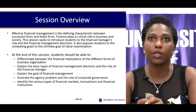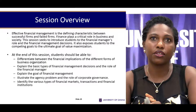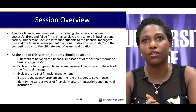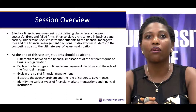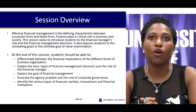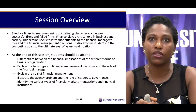This session also exposes students to the competing goals that could be in the domain of the financial manager in the quest to achieve wealth. By the end of this session, students should be able to differentiate the financial implications of the various forms of business organizations, explain the basic types of financial management decisions and the role the financial manager plays, explain the goal of financial management, illustrate the agency problem and how corporate governance can mitigate it, and identify the various types of financial markets and the financial institutions therein.